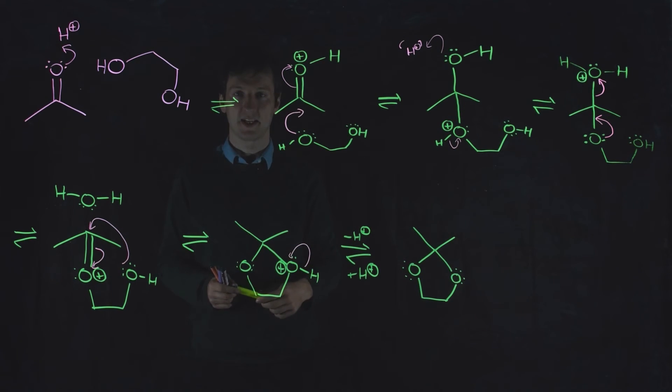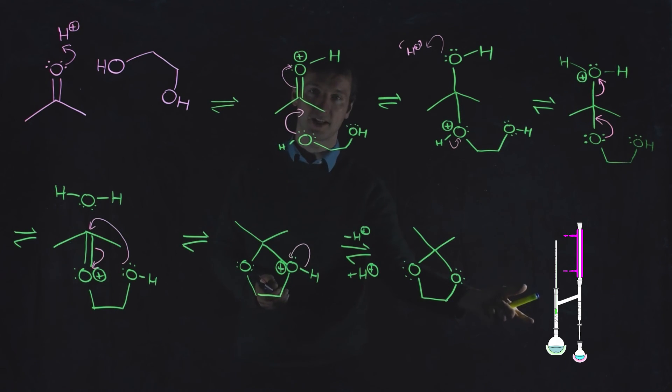So like Le Chatelier's principle says, if you take away the products, you're going to end up with more products. The equilibrium will push to that side. And if you add in more on this side, you'll end up with that side. And so we can govern this reaction by either putting in lots of water or taking out the water. In this case, we'd be taking out the water using something like a Dean-Stark apparatus. So you can see a picture of that here. And if you want to go the other way around, you just put in a big excess of water and some acid, and you'd end up back here.